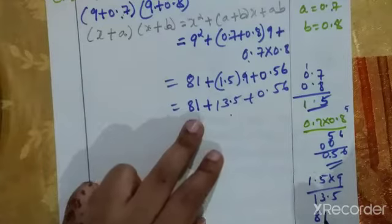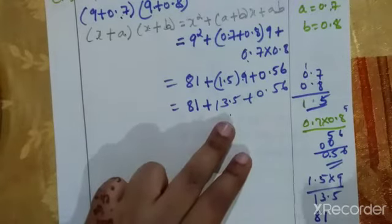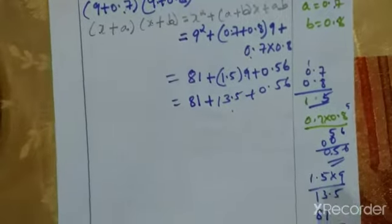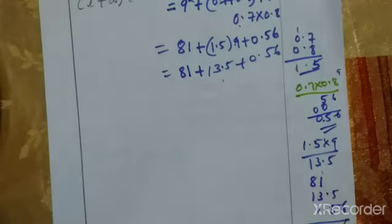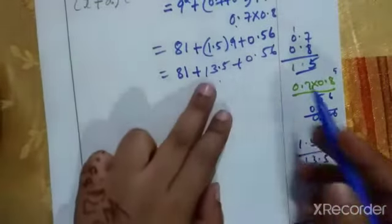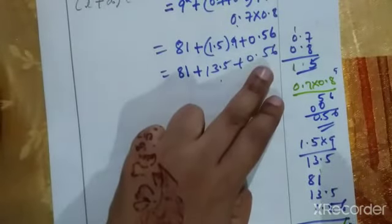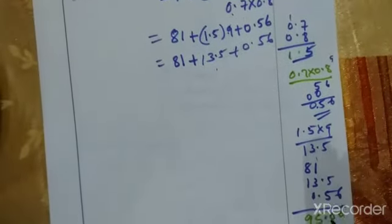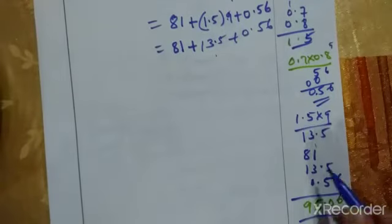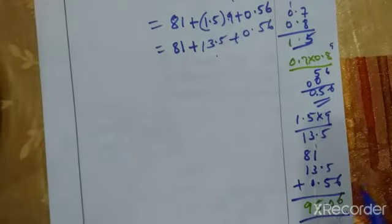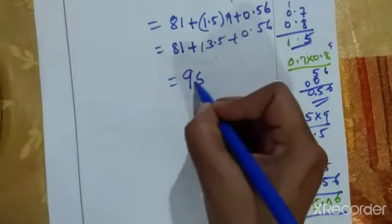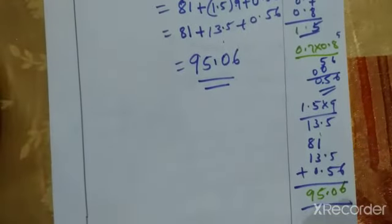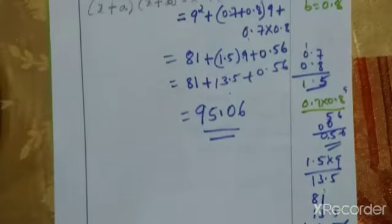Now add 81 + 13.5 + 0.56. The total comes to 95.06. So the answer for 9.7 into 9.8 is 95.06.